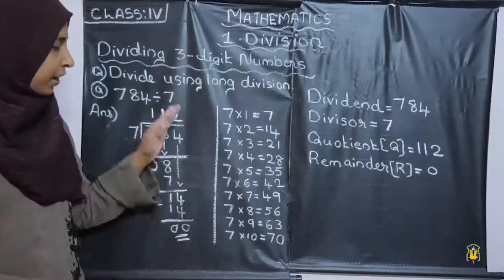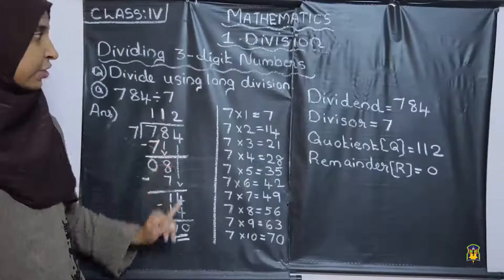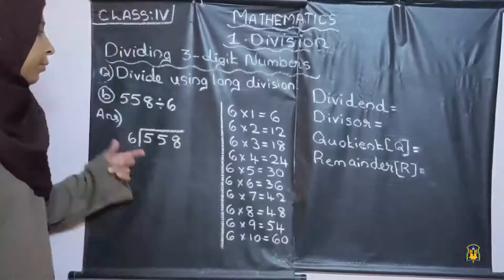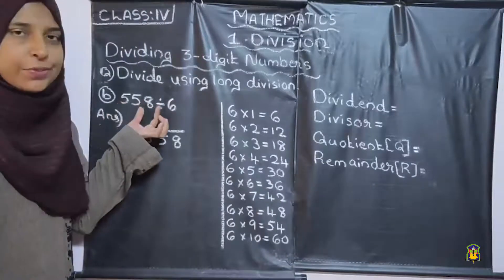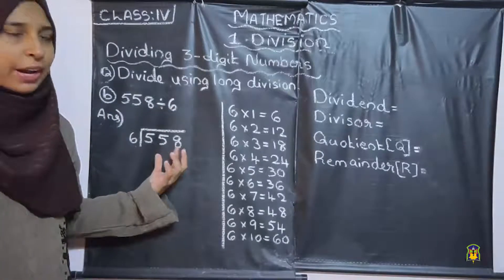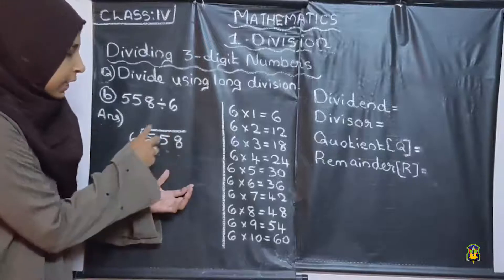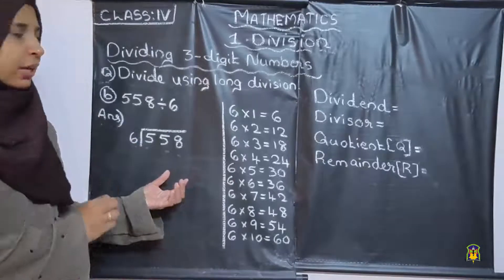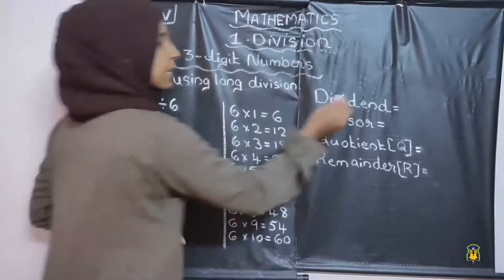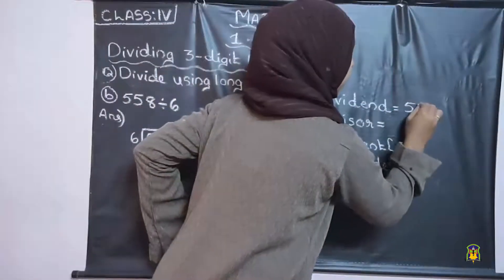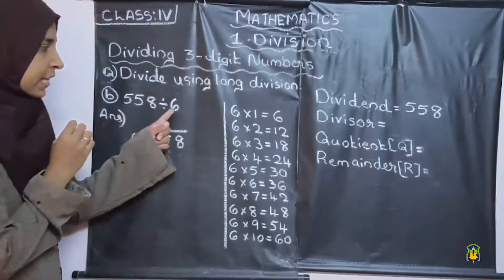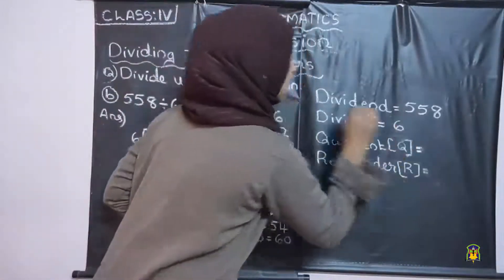Understood how we did the division using the long division method? We can do one more problem. Look here: 558 divided by 6. So first, what is the dividend here? The dividend is 558, and the divisor is 6.